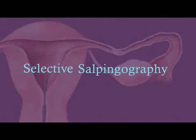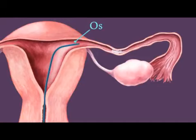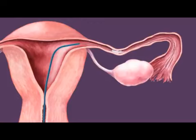When the blockage is confirmed, selective salpingography can be performed. The catheter is pushed into the os, or opening, of the blocked tube. A thin guide wire is placed through the catheter, pushed directly through the blockage and out the opened end of the fallopian tube.